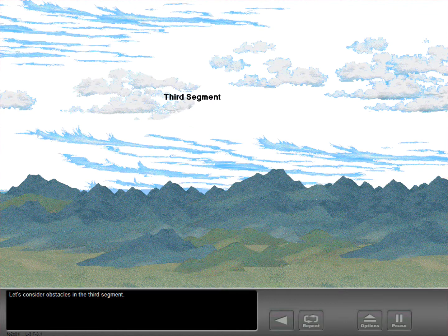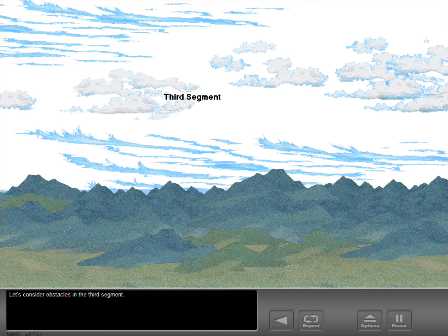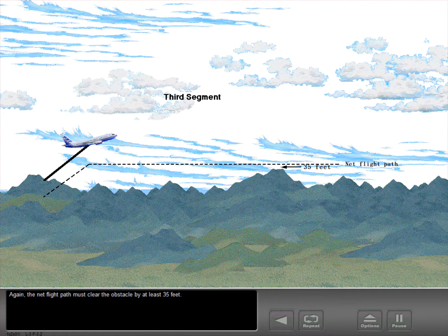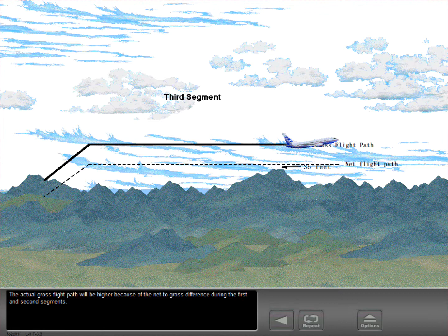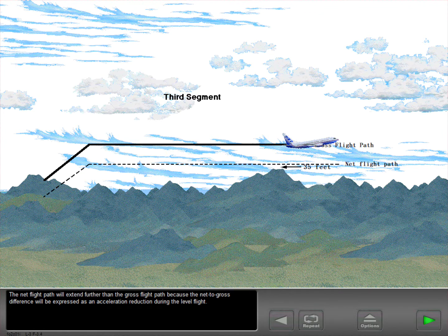Let's consider obstacles in the third segment. Again, the net flight path must clear the obstacle by at least 35 feet. The actual gross flight path will be higher because of the net to gross difference during the first and second segments. The net flight path will extend further than the gross flight path because the net to gross difference will be expressed as an acceleration reduction during the level flight.